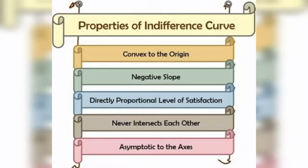We have some properties of indifference curves — five properties. First, it slopes downwards from left to right. Second, indifference curve is convex to the origin. Third, indifference curves will never intersect each other. Fourth, a higher indifference curve represents a higher level of satisfaction. Fifth, an indifference curve neither touches the x-axis nor the y-axis.